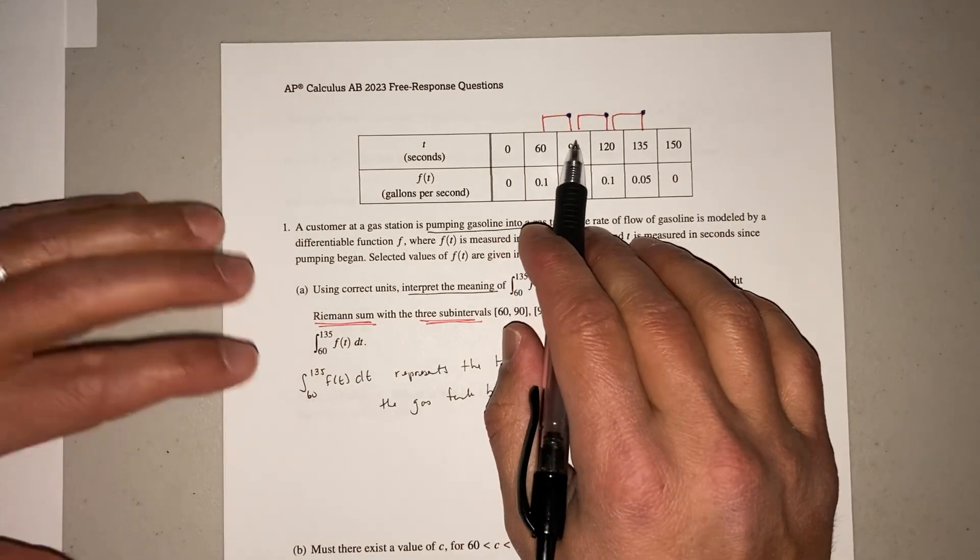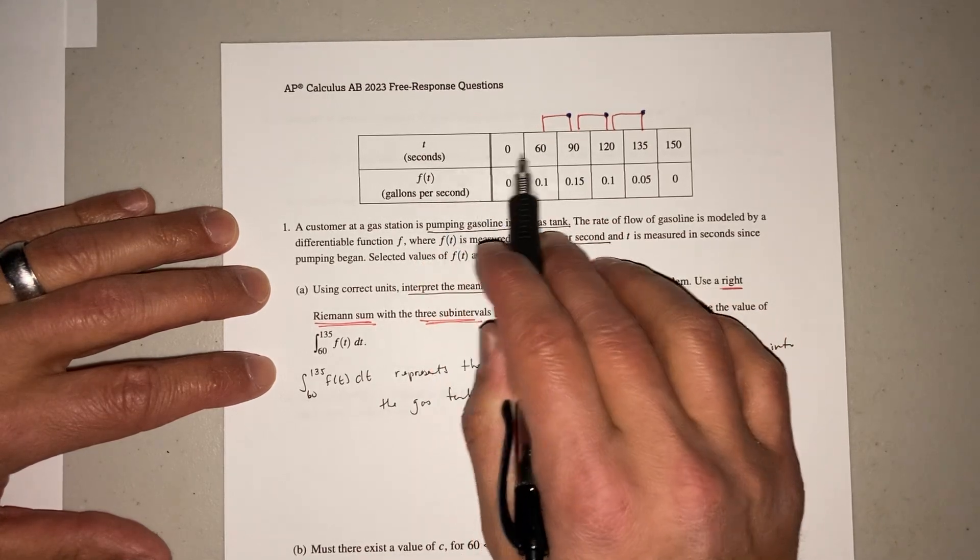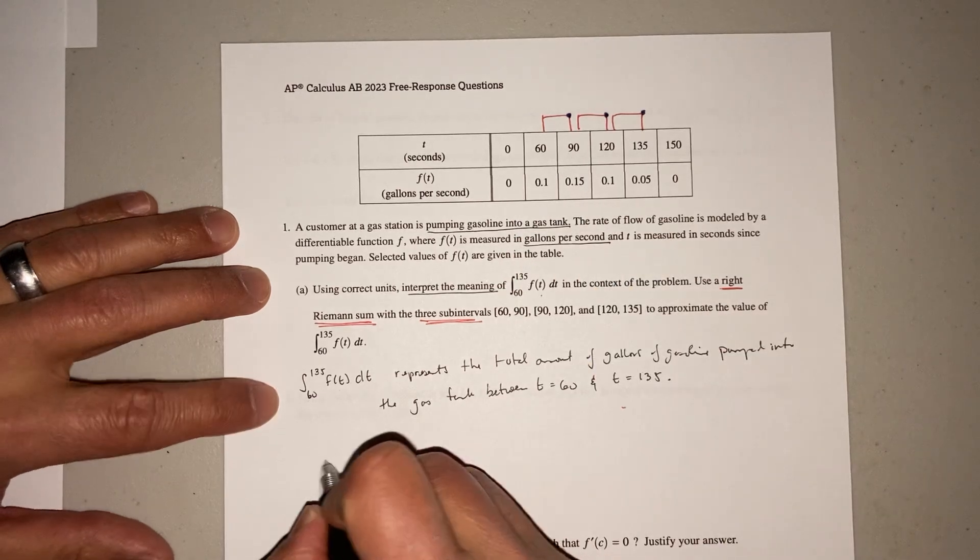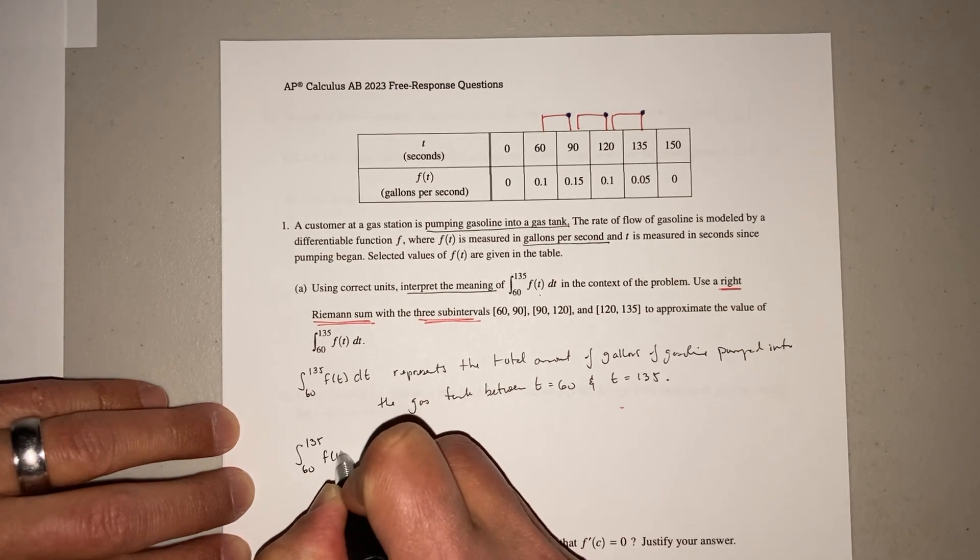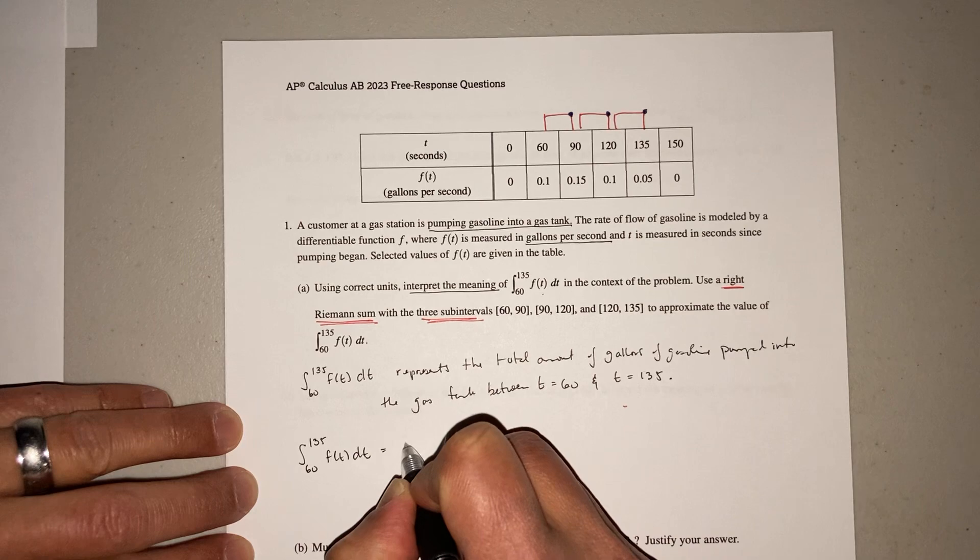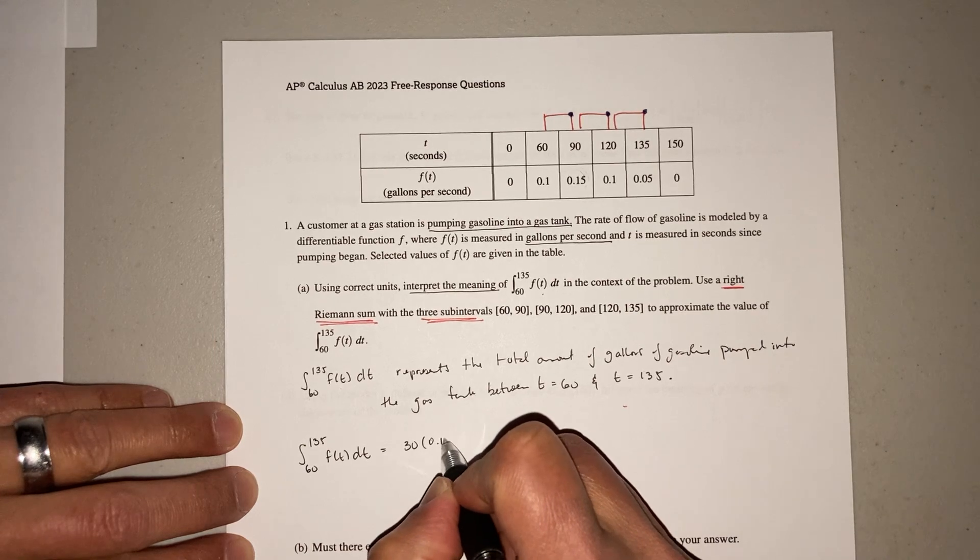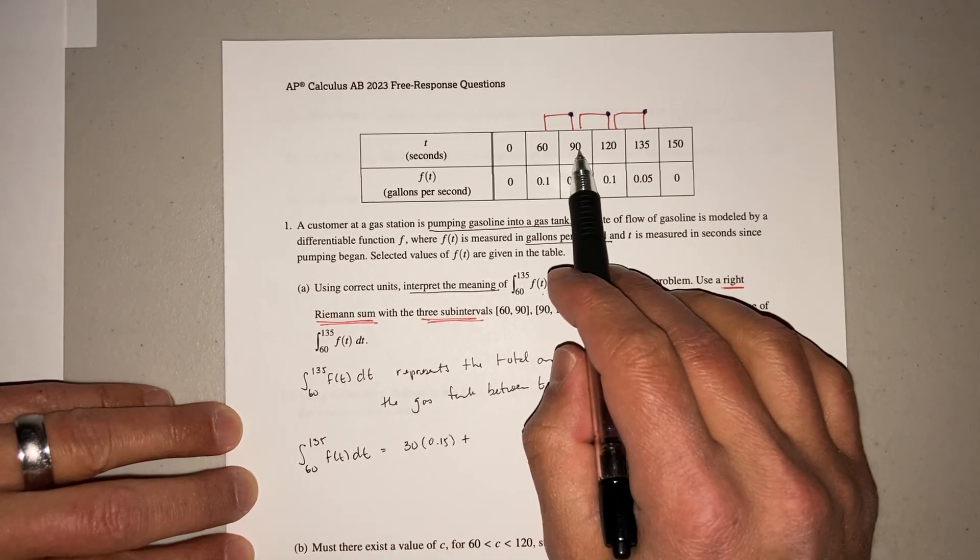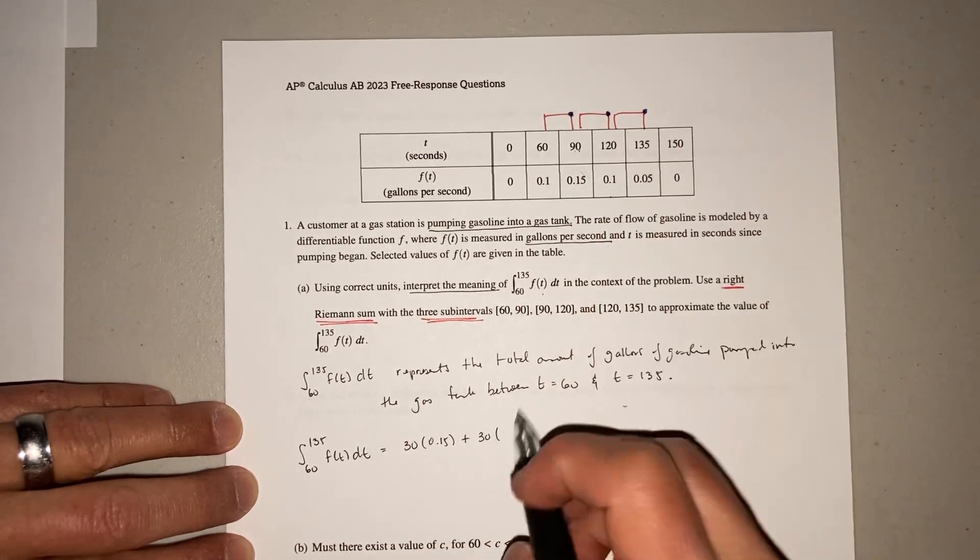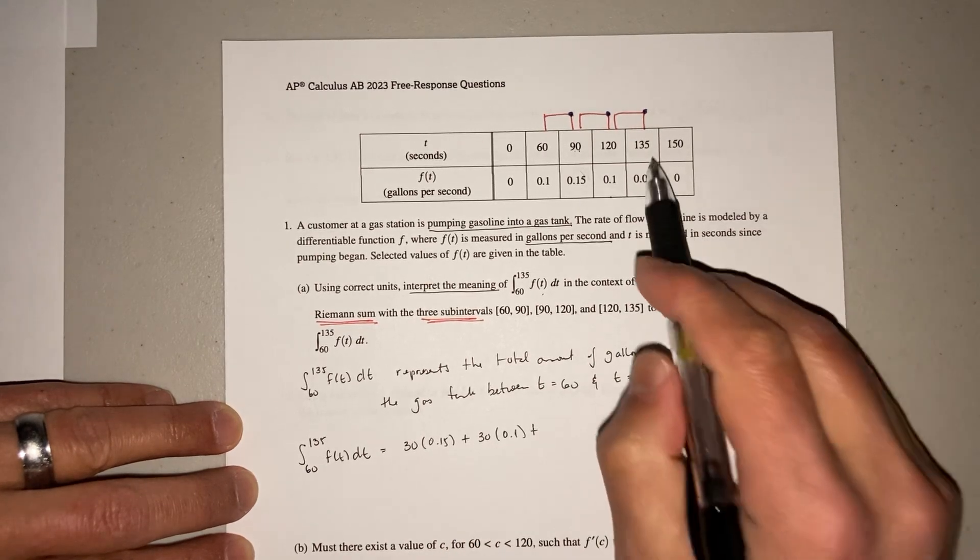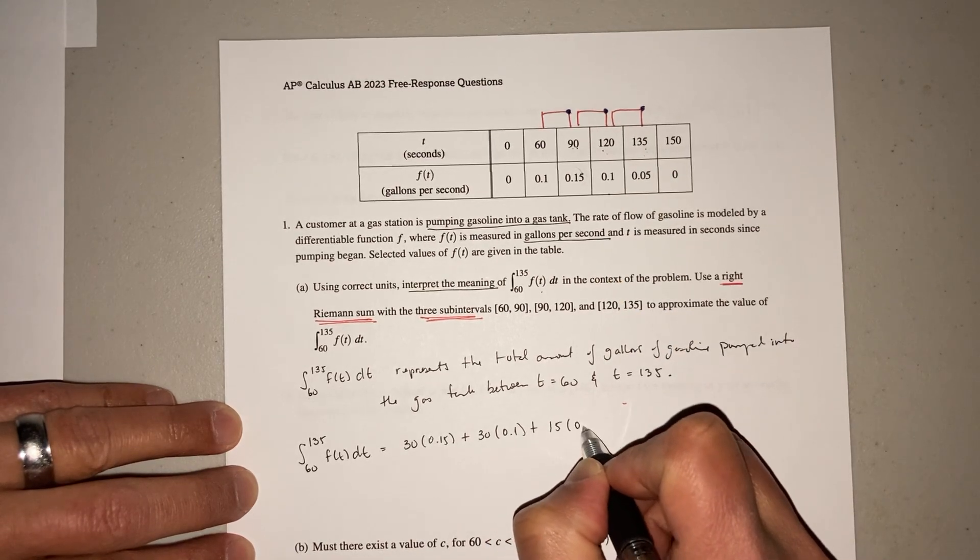So how do you find the area of a rectangle? Well, just base times height. Well, what's the base? Well, the base is the distance here, your X value. So what's the distance from 60 to 90? 30. So we can say the integral from 60 to 135 of F of T dT equals 30 times the perpendicular height, which is 0.15, plus now we go to the next rectangle, 90 to 120. What's that distance? That's another 30 times 0.1, plus then the last one, 120 to 135. That is 15 times 0.05.